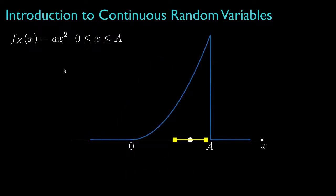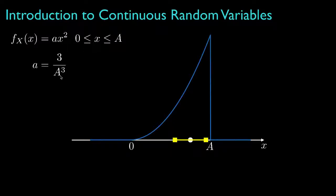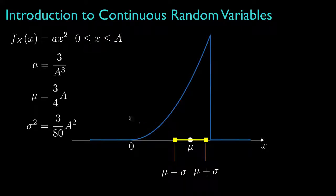Here's an example of a random variable whose probability density is proportional to x squared over the interval from zero to some value a. Because the density must integrate to one, this leading coefficient — called lowercase a — turns out to need to be 3 over a cubed. We can then use this density to determine that the mean for the random variable is 3 fourths of a, and the variance is 3 over 80 times a squared, with the corresponding spread about the mean plus or minus one standard deviation shown here.